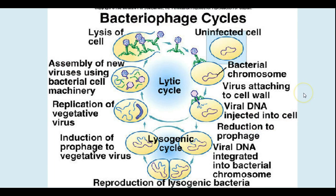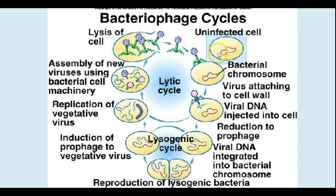Bacteriophages affect bacteria only, but we've learned a lot about how viruses act by studying them. There are two cycles that can be present: a lytic cycle and a lysogenic cycle. When you have an active bacterial viral infection that's the lytic cycle — the virus takes over the cell and causes it to start producing viral particles that are assembled, and you end up with the lysis or rupture of the cell releasing the new virus particles.